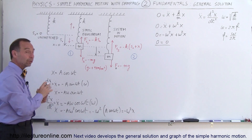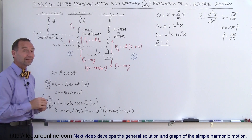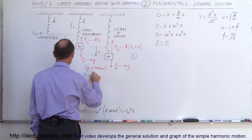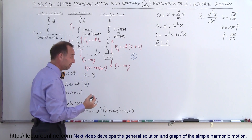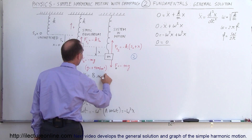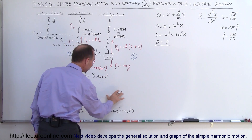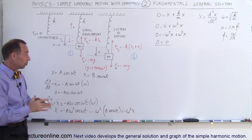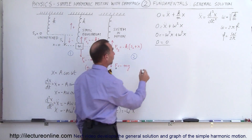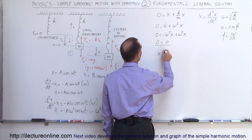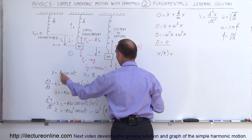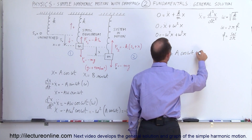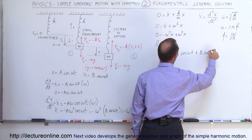That's not the only solution, because we could also use a times the sine of omega t. For example, we could say x is equal to b times the sine of omega t. Going through the same logic again gives us 0 equals 0, which also satisfies the equation. That means the general solution is simply the sum of these two, so x as a function of time equals a times the cosine of omega t plus b times the sine of omega t.